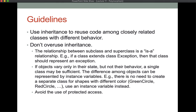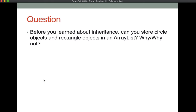It's usually only when there needs to be some explicit communication from the parent class to the child class. So here's the question: before you learned about inheritance, could you store circle objects and rectangle objects in an ArrayList? The answer was no. You would have to have one ArrayList for your circle objects and another for your rectangle objects, because an ArrayList can only hold one kind of object at a time. But with inheritance, we can come up with a way to store them in an ArrayList as shapes.